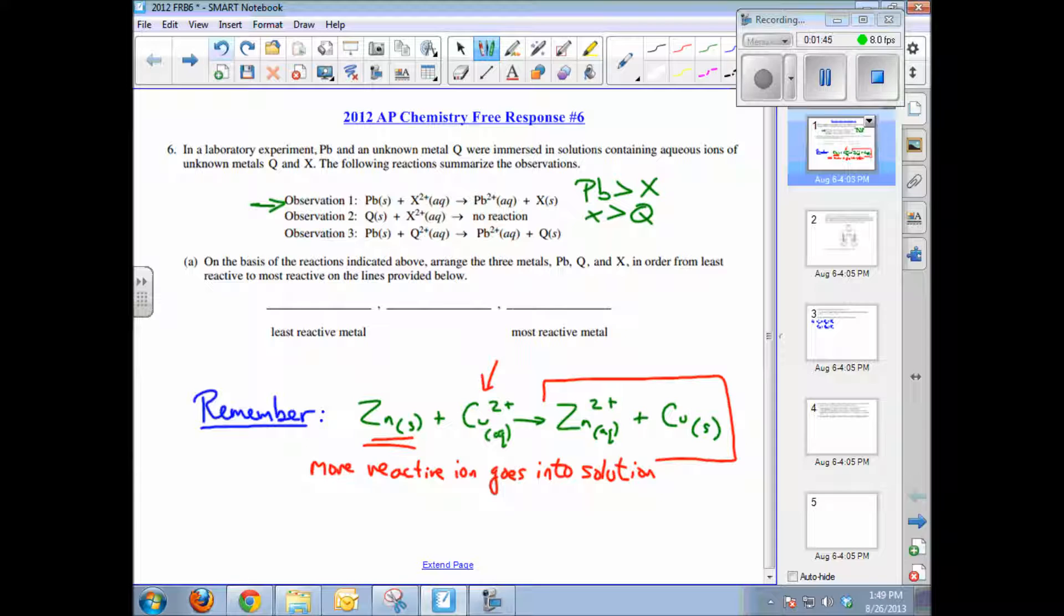And then finally, very similar to observation one, lead in a solution of Q+, lead goes into solution shown there. So lead is greater than Q. So now we can put all three of those in order from least reactive to most reactive. So the least reactive one is Q, the middle one is X, and the most reactive is lead.